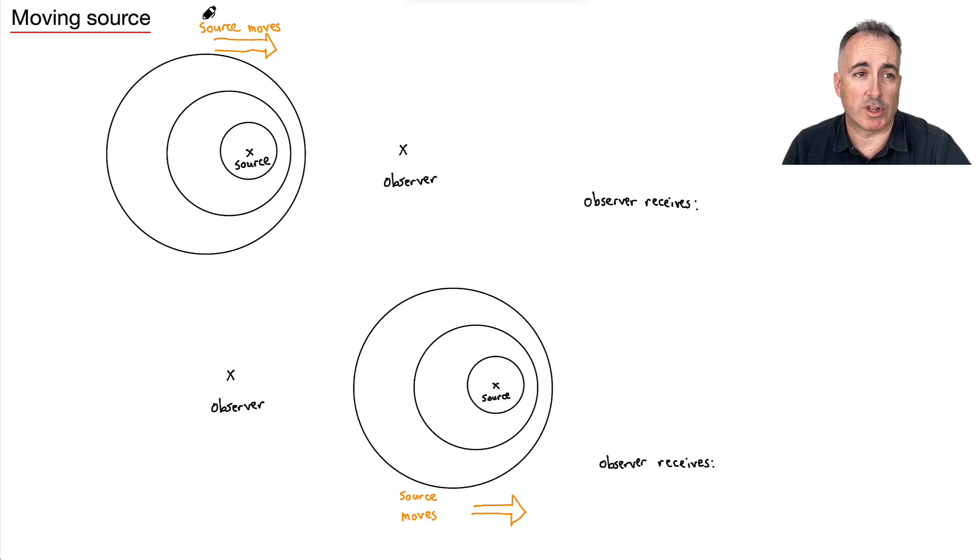Let's consider a situation where the source is moving. Say this is something emitting sound, a source here. This could be like a car driving to the right, and you're an observer just standing there listening. Because this source is moving, you can imagine the source is emitting these concentric rings that go out.